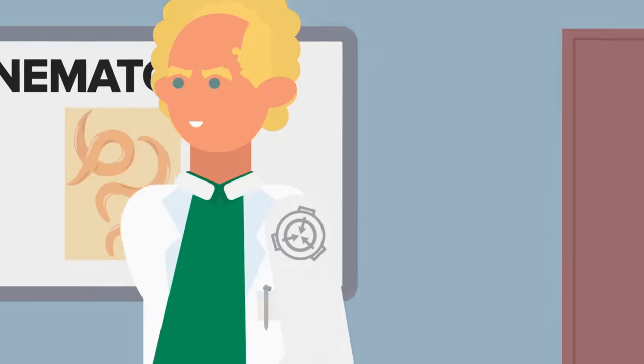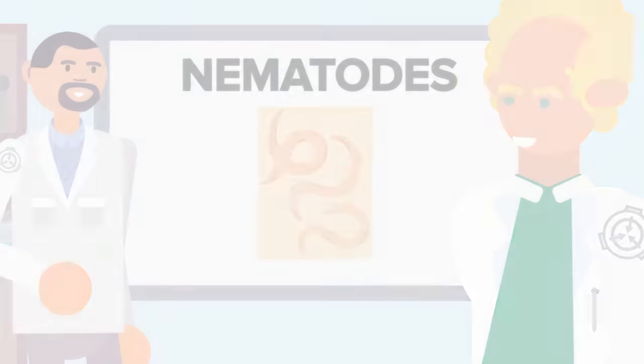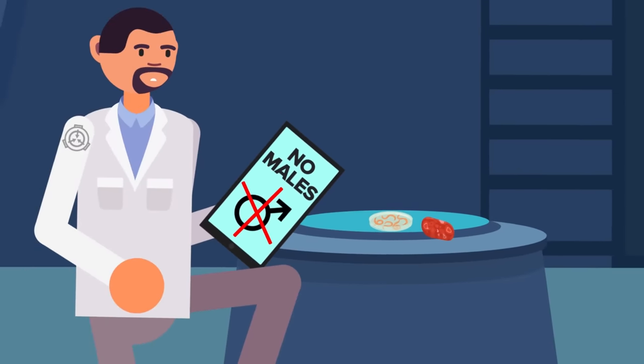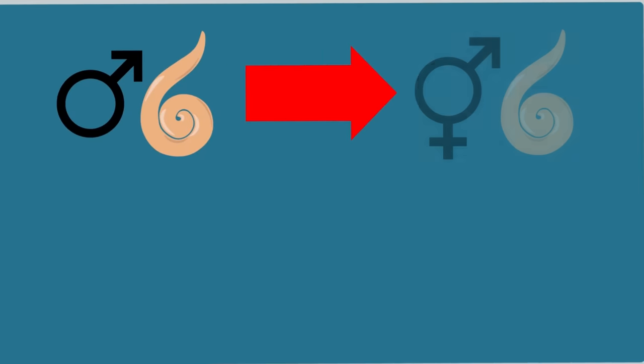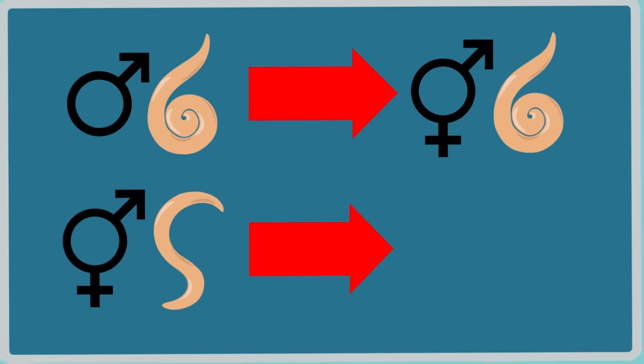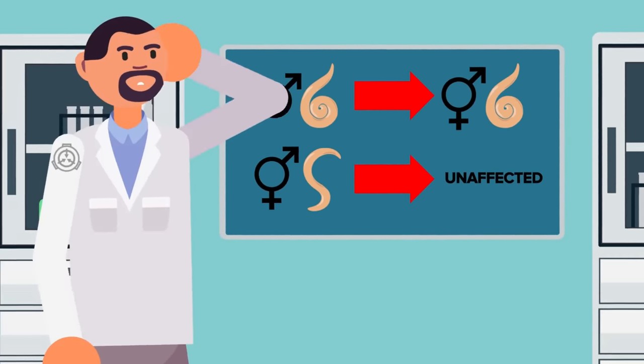When nematodes, which are either male or hermaphroditic, were exposed, no males were produced during the experiment. Male nematodes changed and became hermaphroditic, and the hermaphroditic specimens were completely unaffected as far as the researchers could tell.